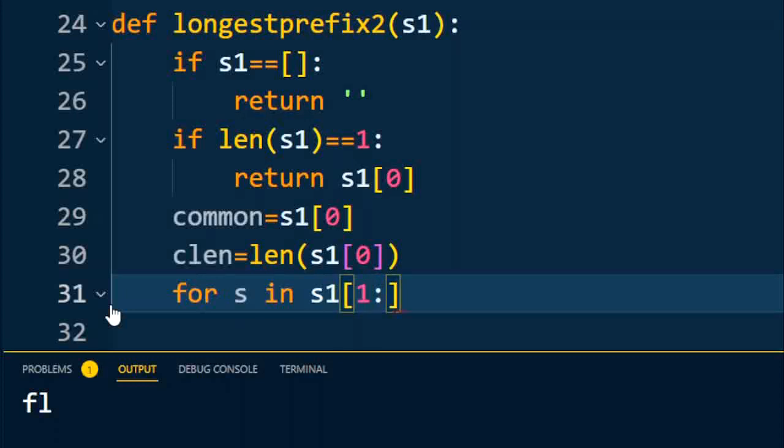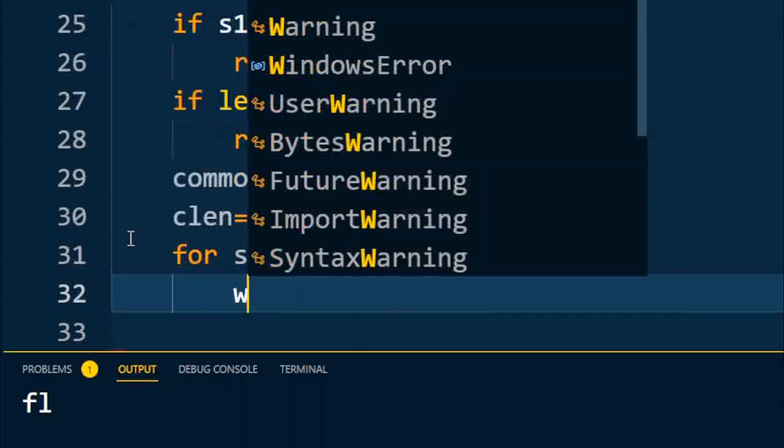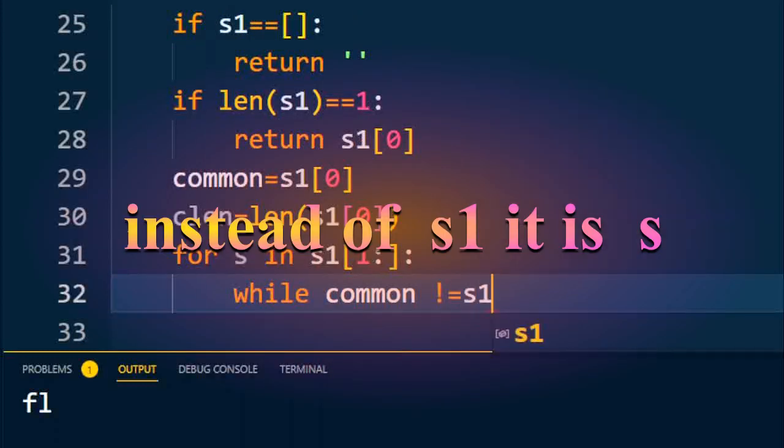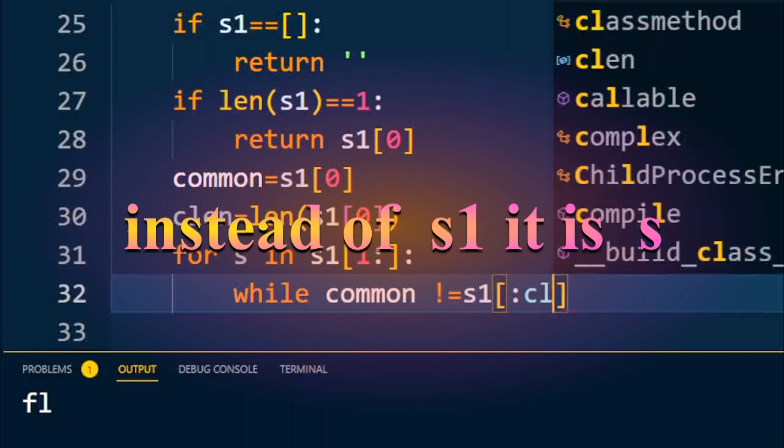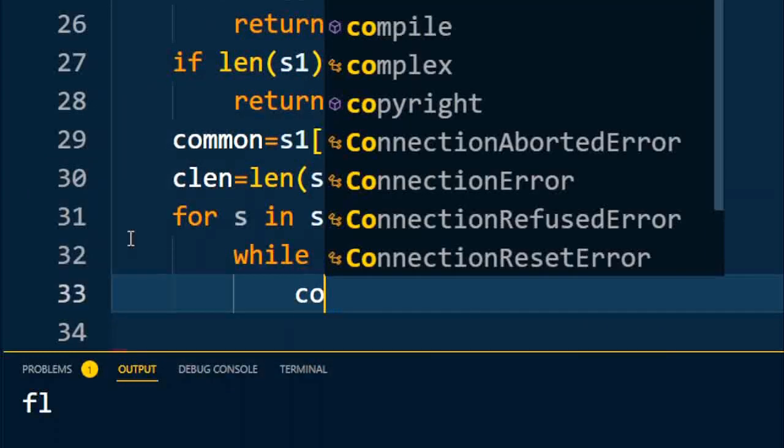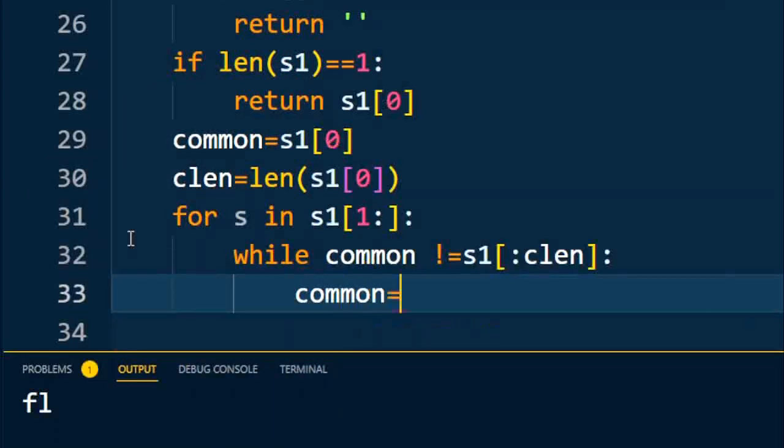Inside the loop I am going to write while common is not equal to s[:clen], or you can say common_length. Inside the loop, common equals common[:-1].